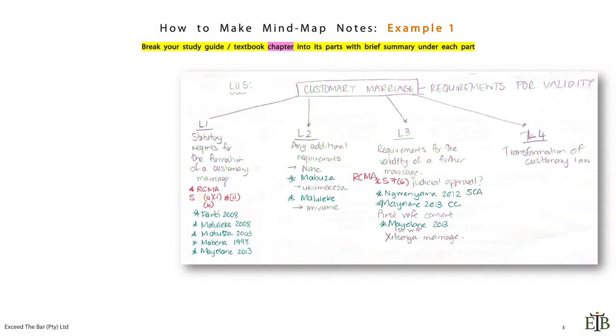So how to make a mind map. Here's an example. A friend of mine allowed me to use this. She did this mind map on customary marriage and the requirements for validity of a customary marriage. It was learning unit five of the customary law course. You need to break your study guide or textbook chapter into its parts with brief summary under each part.